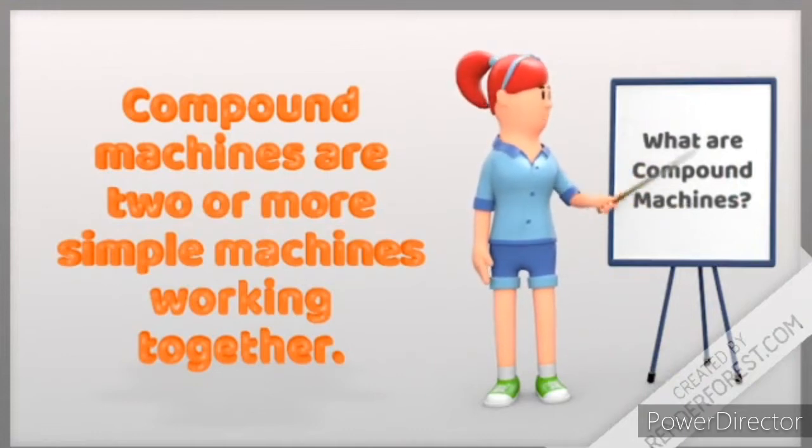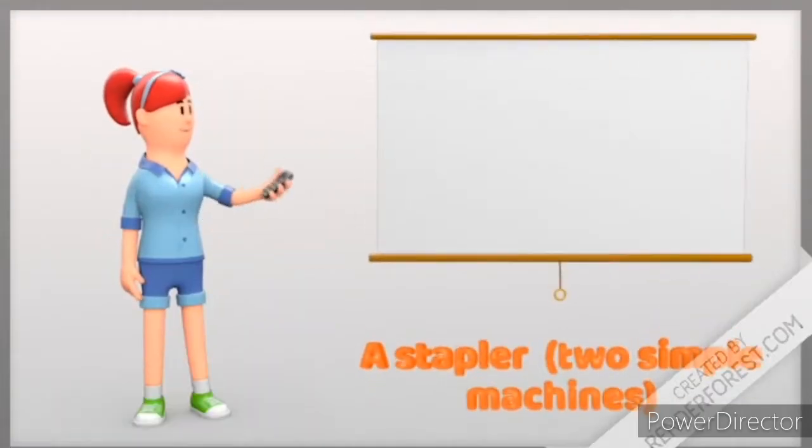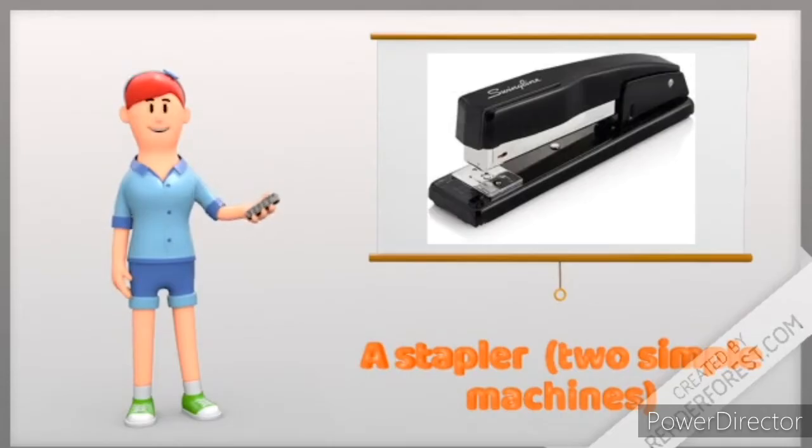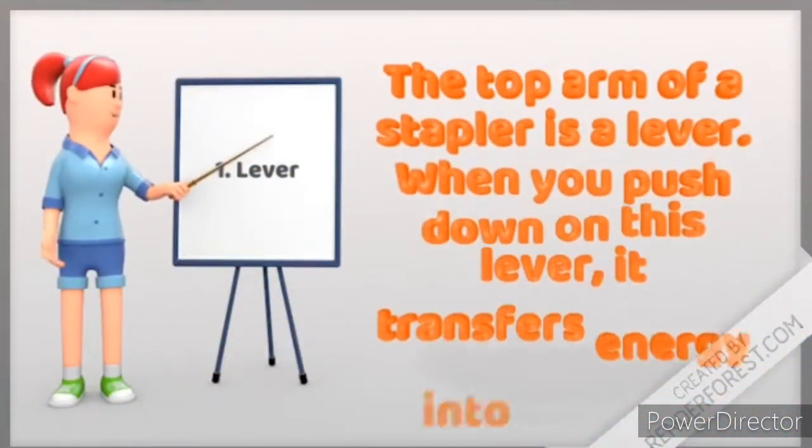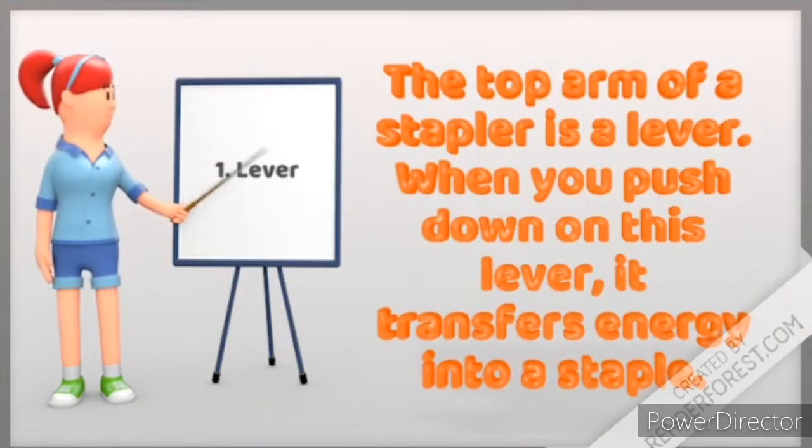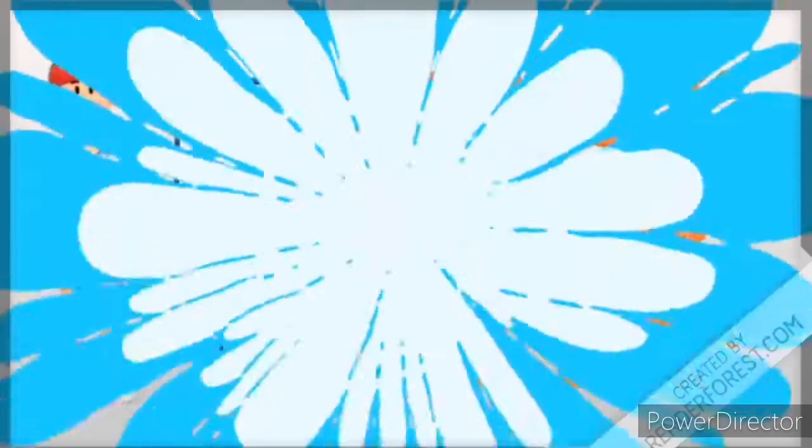For example, a stapler is made up of two simple machines. The top arm of a stapler is a lever. When you push down on this lever, it transfers energy into a staple which staples your paper. The staples in a stapler are wedges. When you push down on a stapler, it sends out a sharp metal staple which pierces through paper.